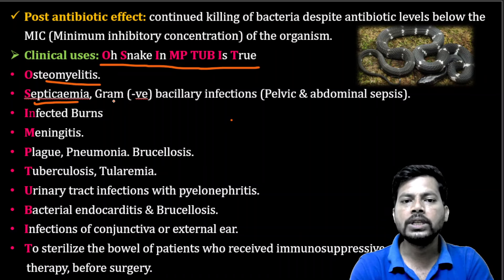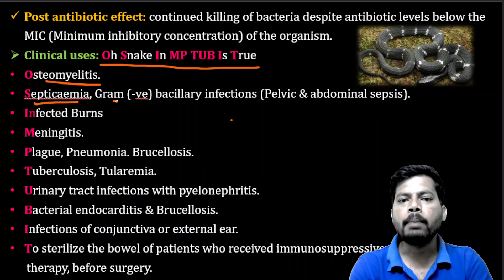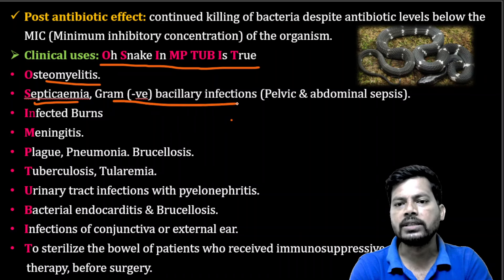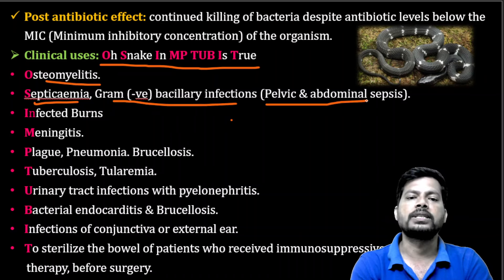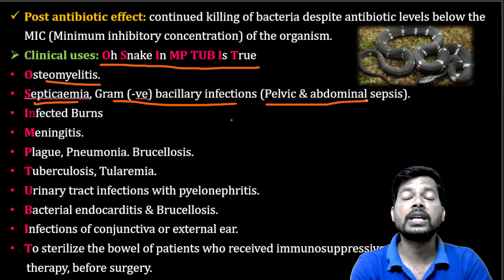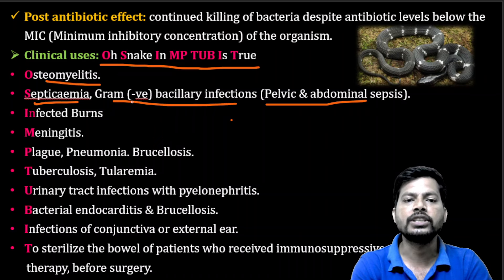Aminoglycosides are also used in gram-negative bacillary infections such as pelvic as well as abdominal sepsis — infections of the pelvic region and abdominal region.